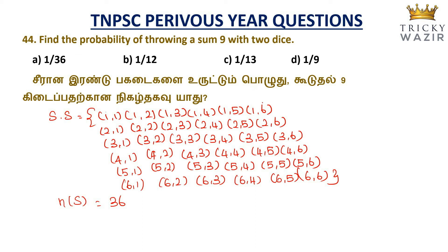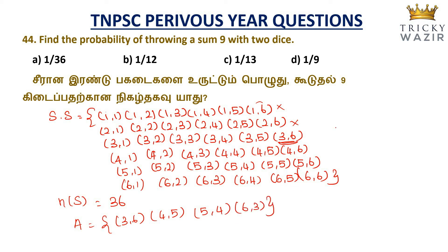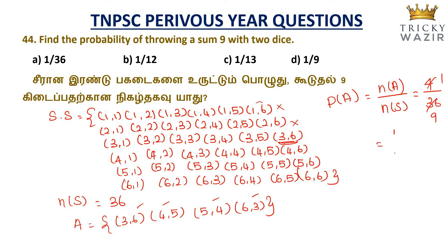The combinations that sum to 9 are: (3,6), (4,5), (5,4), and (6,3) — giving 4 favorable outcomes. So probability P(A) equals n(A) divided by n(S) equals 4 by 36, which simplifies to 1 by 9. Option D: 1 by 9 is the correct answer.